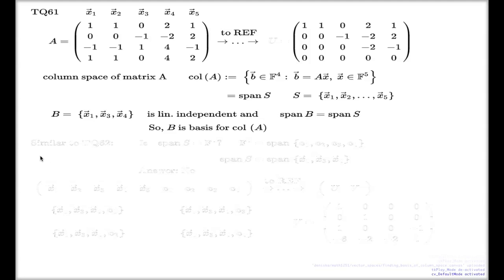Now, the second part of the slide, I called it similar to Question 62, because Question 62 asks something close to this. It says whether the column space of my matrix, which is equivalently span of the set S, is equal to the whole vector space F^4, or R^4, or C^4, or Q^4.